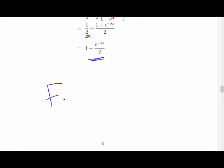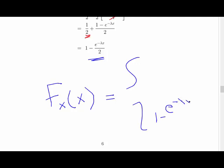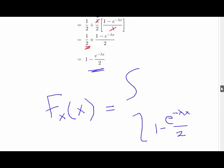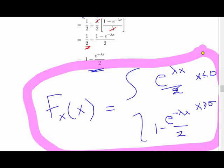So to state the answer properly: F of x equals e to the lambda x over 2 where x is less than 0, and F of x equals 1 minus e to the minus lambda x over 2 where x is greater than 0. You should state your answer properly like that. That is the cumulative distribution function of x.